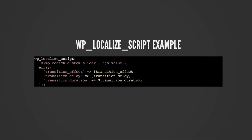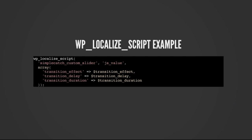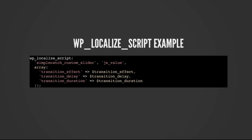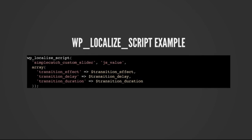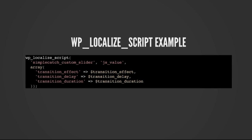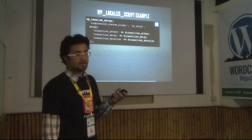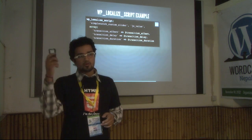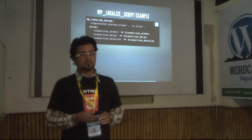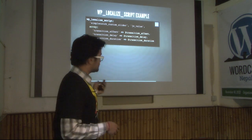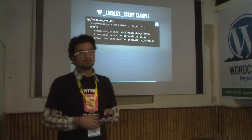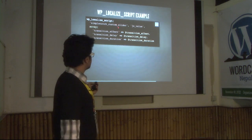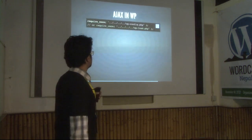I found one example in Catch Themes — Simple Catch. They send all the values to their sliders using localized script. Because if you're creating a theme for WordPress.org, they don't like you echoing JavaScript all over the page. If you do that, your theme will mostly be disqualified and they will not accept it. If you use localized script, there is a higher chance of getting accepted.